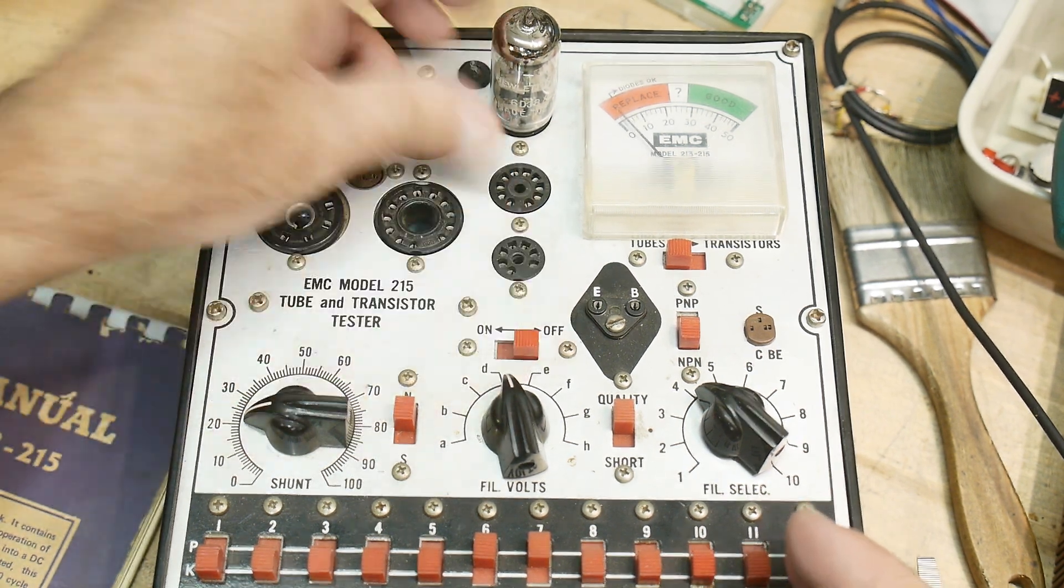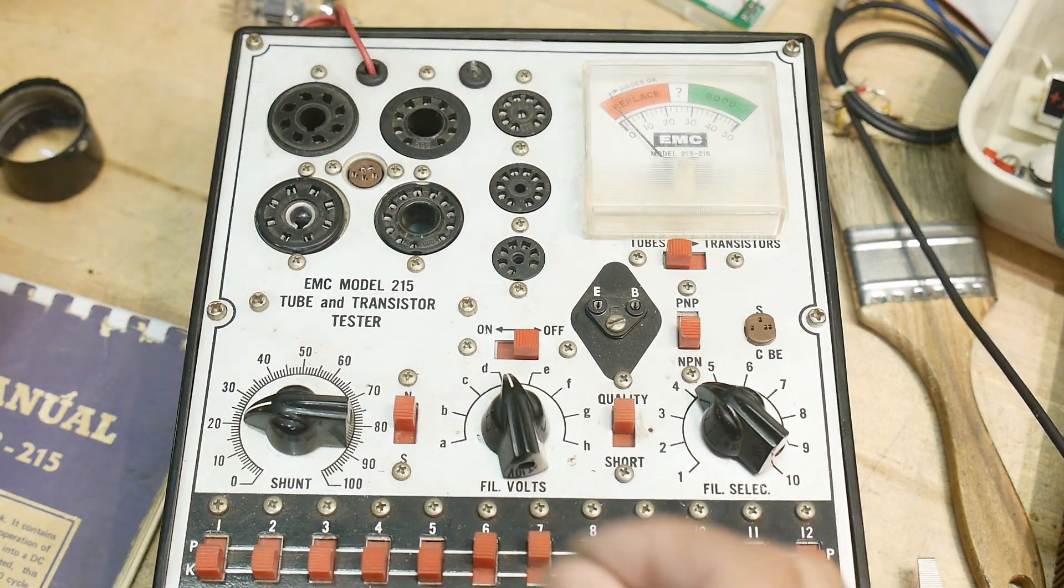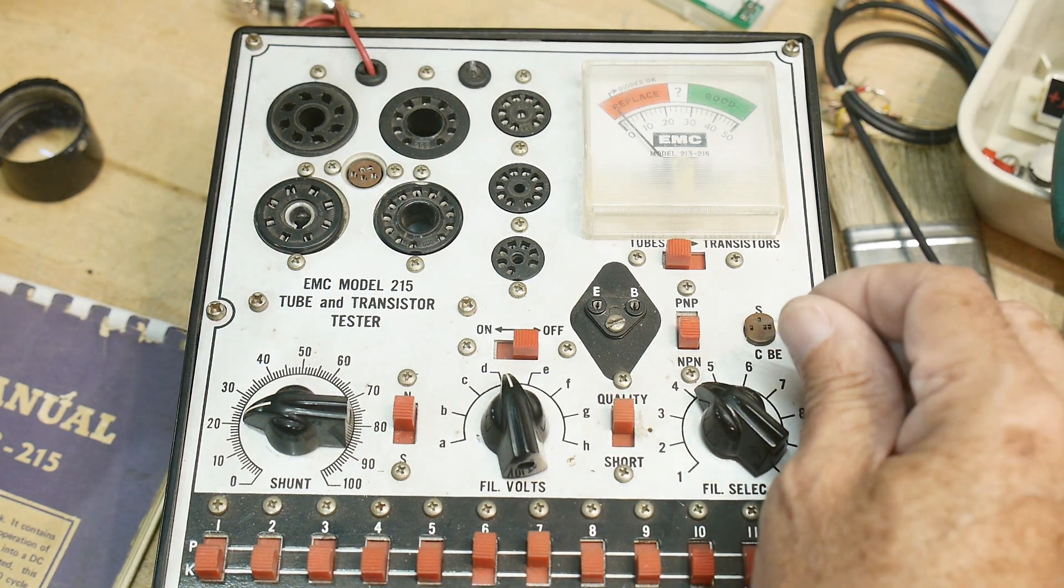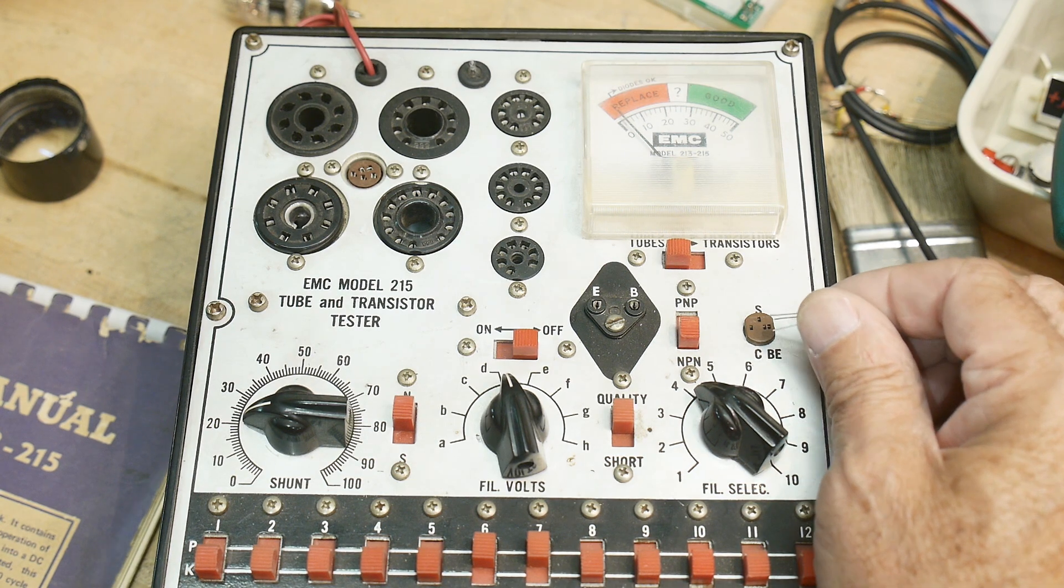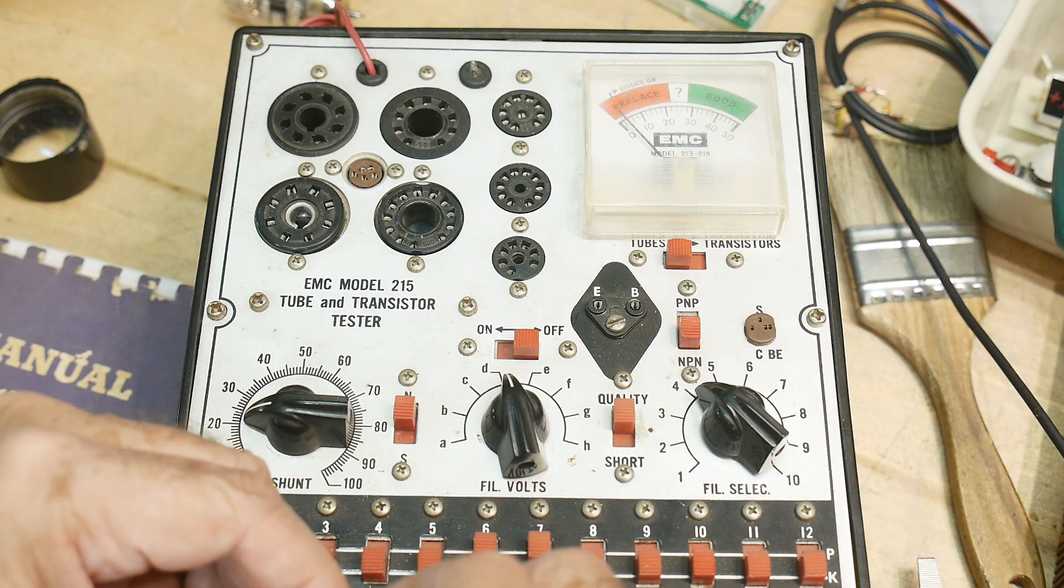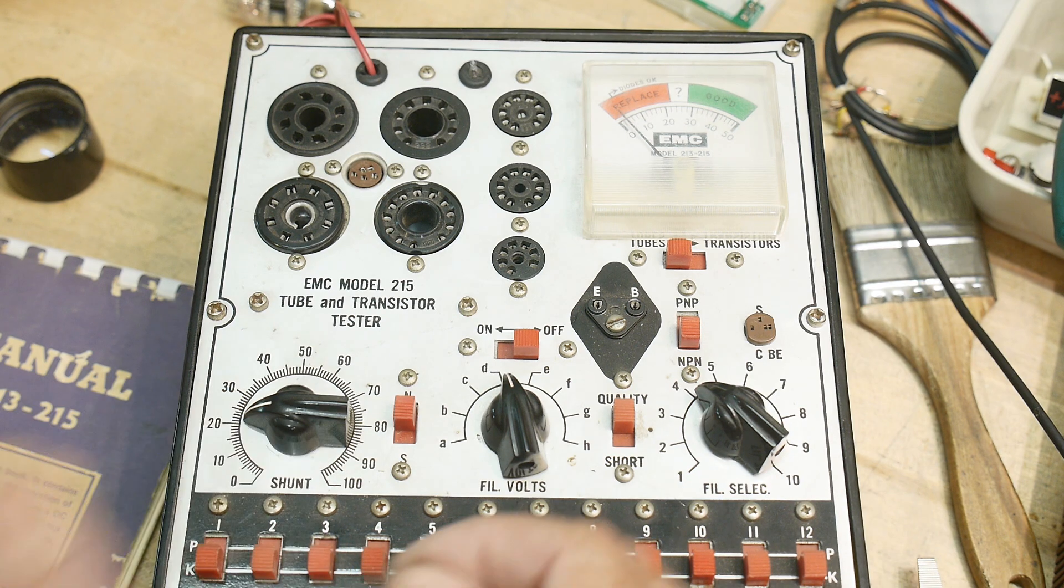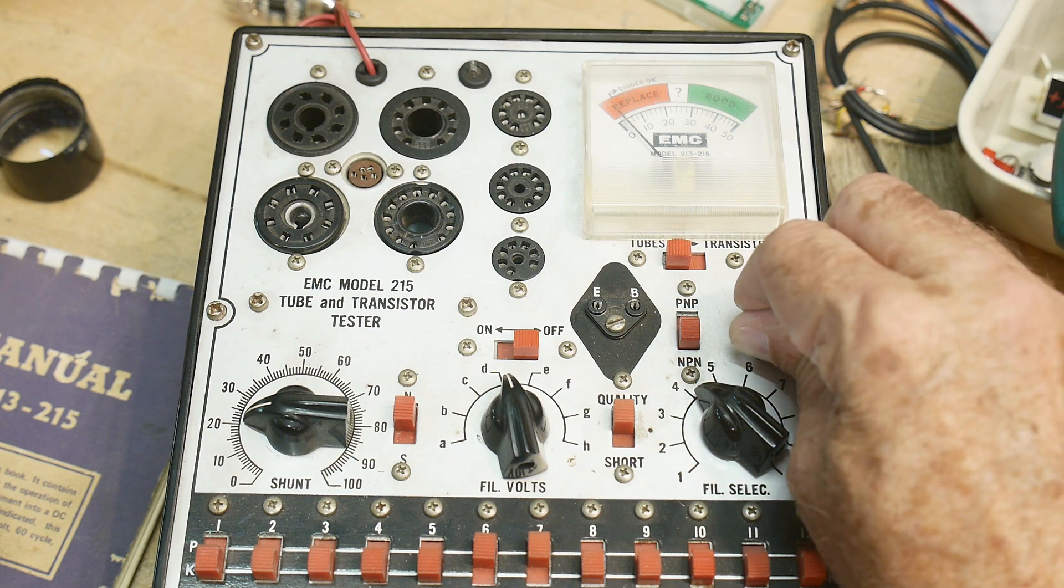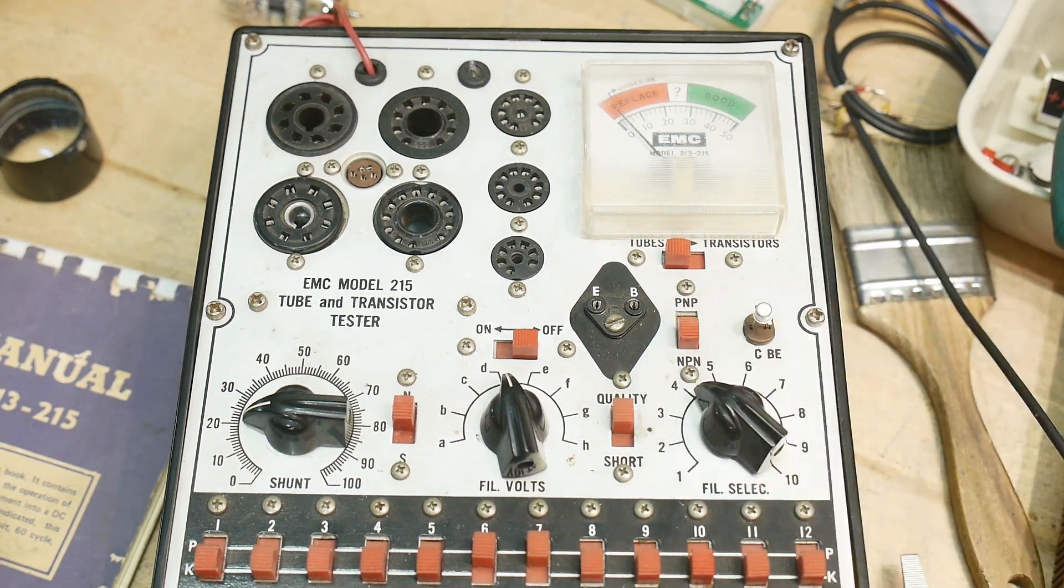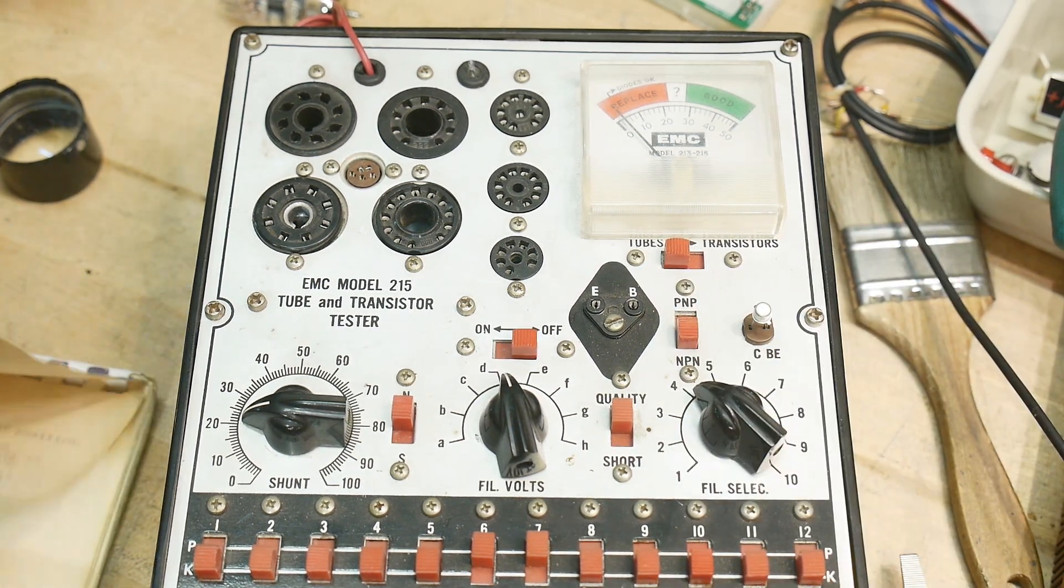All right. So turn this off, take the tube out. Let's see here. Emitter base collector. Emitter S. I don't know what S is. Emitter base collector. Okay. I'll put that in there. NPN. All right.